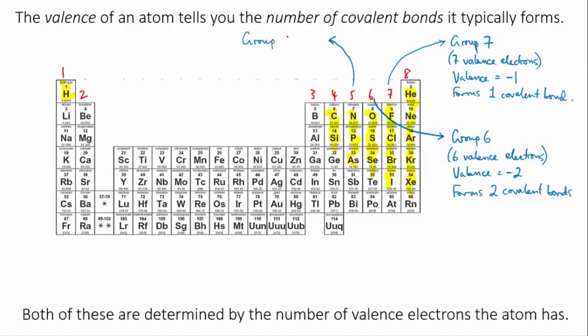Likewise, elements in group 5 have a valence of minus 3 and form 3 bonds, and elements in group 4 have a valence of minus 4 and form 4 bonds.